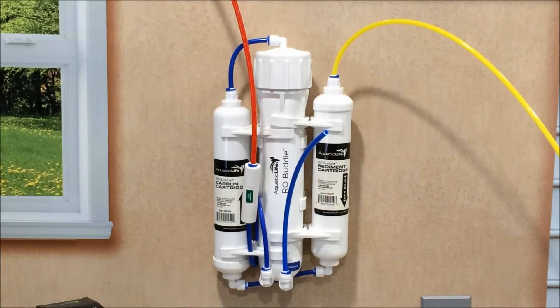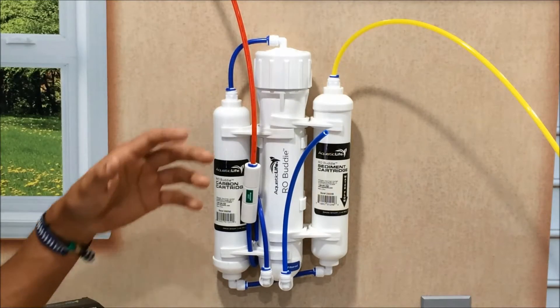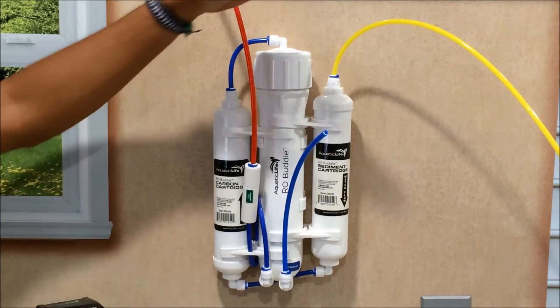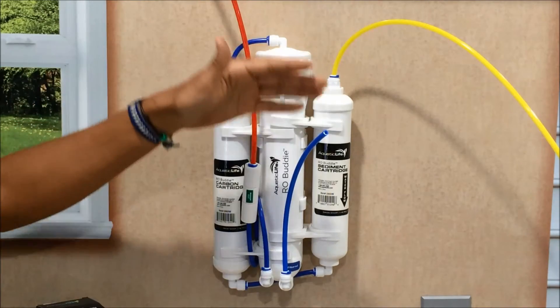So why would you need a single versus a triple? The single gives you one reference point, so you can either measure your supply or your filtered water. The dual allows you to measure two reference points, your supply and your filtered.